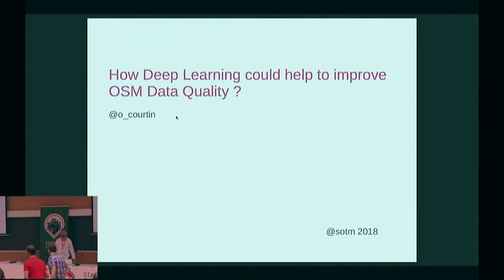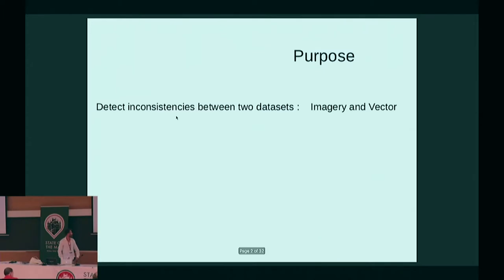Hi everyone. This talk is about improving data quality with deep learning, and the purpose is to detect inconsistencies between two kinds of datasets: the aerial one, like satellite imagery, and a vector of, for instance, buildings or roads.